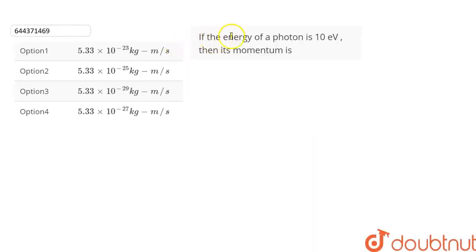The question is, if the energy of a photon is 10 electron volts, then its momentum is, and we are given four options from which we have to choose the correct option. Let's find out.